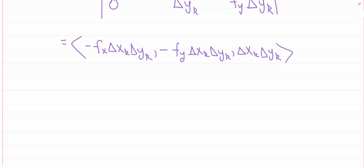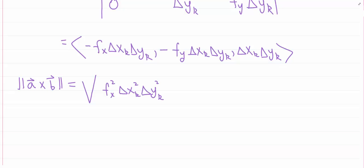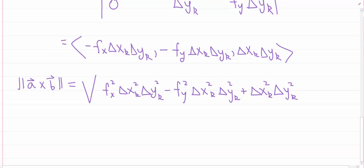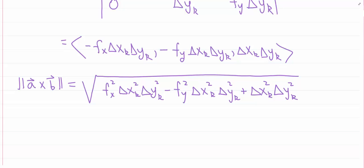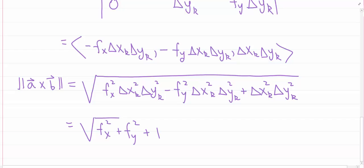Now I want to take the magnitude of a × b. That's the square root of fₓ²·Δxₖ²·Δyₖ² + f_y²·Δxₖ²·Δyₖ² + Δxₖ²·Δyₖ². Since Δxₖ and Δyₖ are both positive, I can factor them out to get √(fₓ² + f_y² + 1) · Δxₖ·Δyₖ.